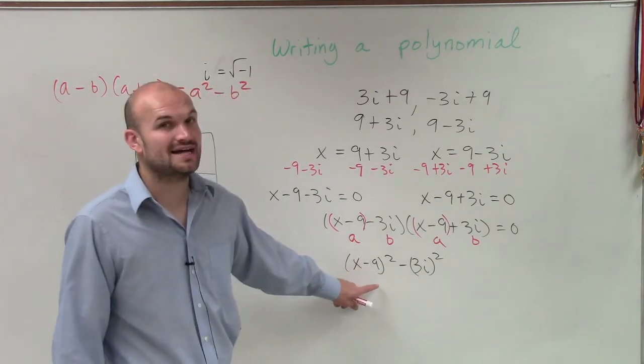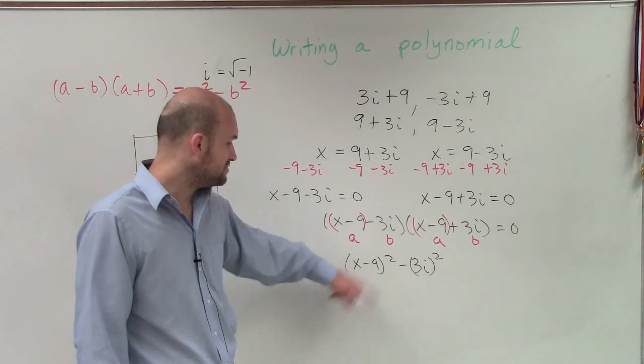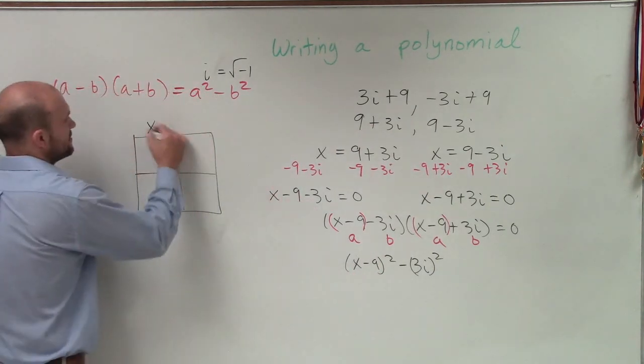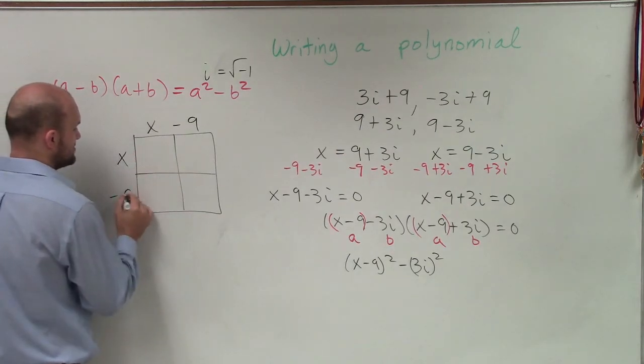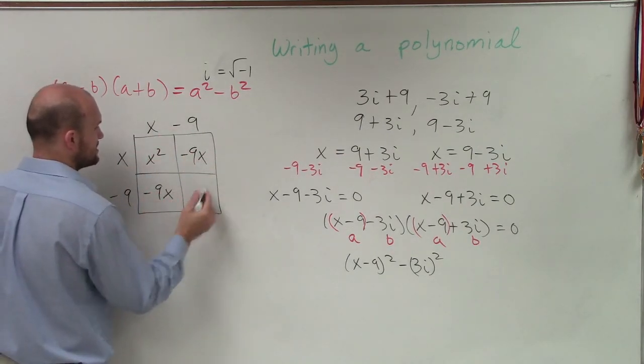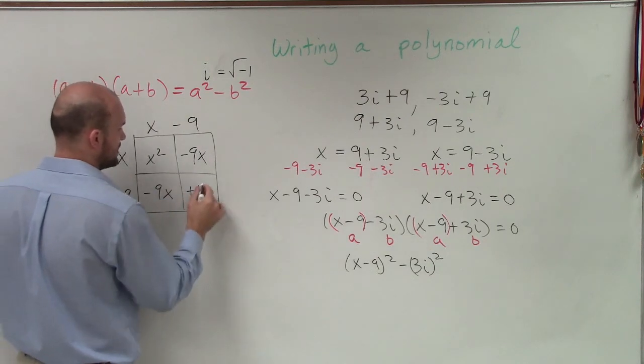So remember, you've squared the last two terms. And then you're going to double the middle term, and that will be your middle value. But let me show you real quick. So if I did x minus 9 times x minus 9,